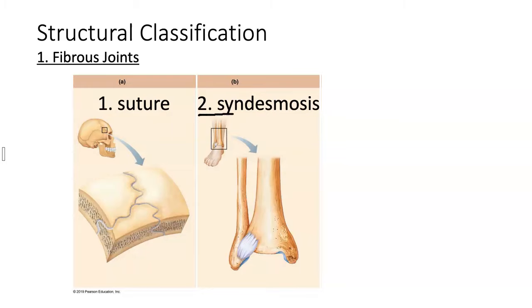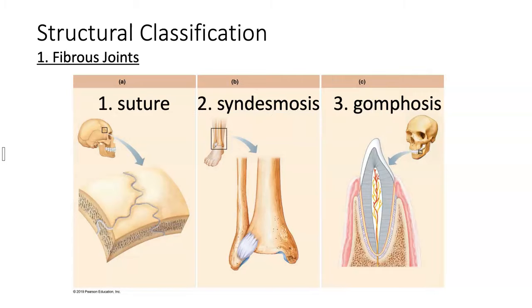Another type of fibrous joint is a syndesmosis, where two bones are united by a ligament. The third type of fibrous joint is a gomphosis, which is specifically the way a tooth is anchored in the socket by short fibers known as the periodontal ligament.